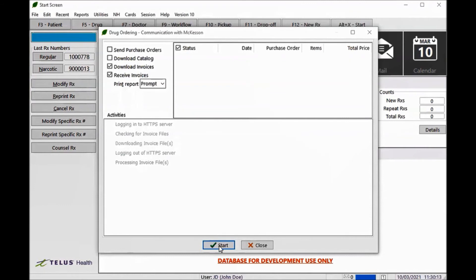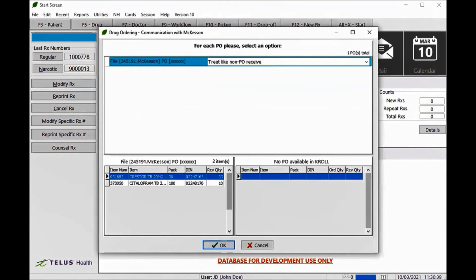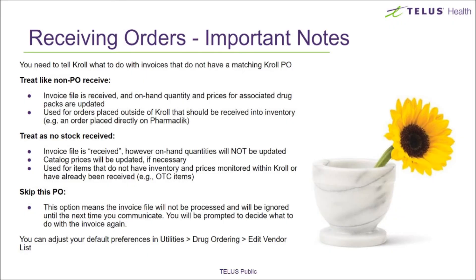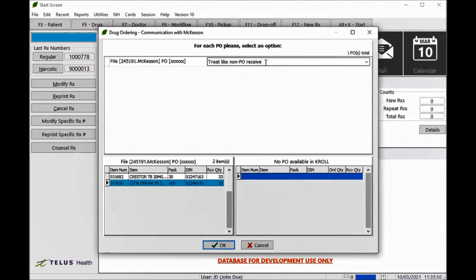If you come across an invoice that does not have a matching CROWL purchase order, you will be prompted to decide what to do with the invoice using the drop-down for each invoice. These will be orders created in Pharmaclick. Selecting Treat as non-PO receive will update your inventory, drug prices, and clear the invoice — choose this for invoices that contain items you need to receive into your inventory. The Treat as no stock received option will not update your inventory; select this if the invoice is for items you do not track inventory for, such as front store items or supplies. Skip this PO will prompt you to decide again later — the invoice is downloaded but not processed. For pharmacies new to CROWL or new to order receiving, the first time you communicate with McKesson the past 14 days of invoices will be displayed. Be sure to review each one to avoid duplicate receiving. Once you've decided what to do with each invoice, select OK.